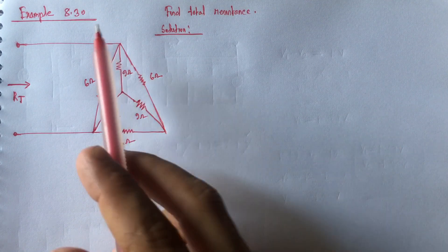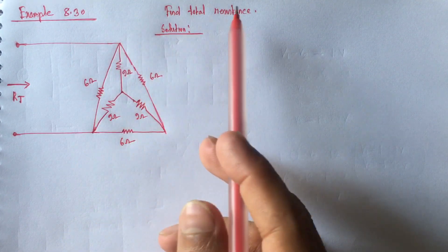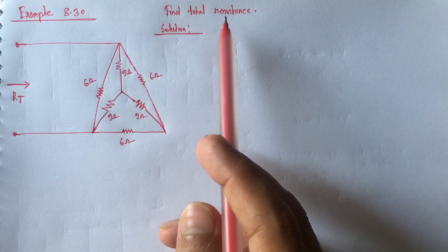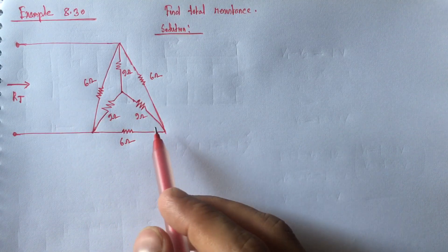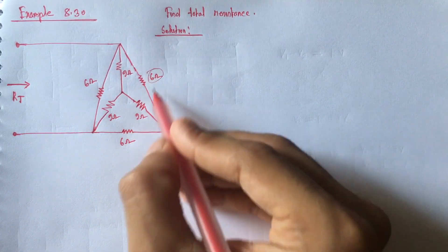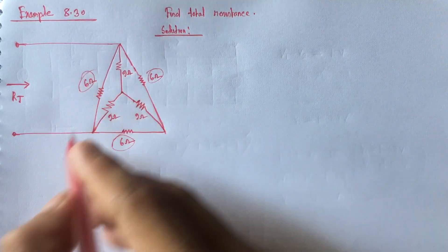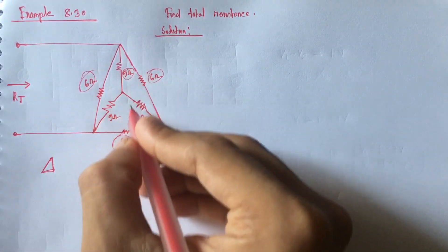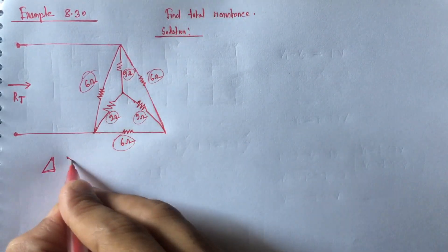Hi viewers, today we will solve example 8.30 from Boyle State. Here we have to find out total resistance for the circuit. From the circuit, we see that three 6-ohm resistances form a delta and three 9-ohm resistances form a Y.